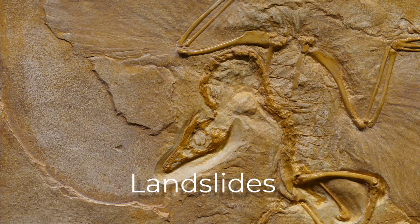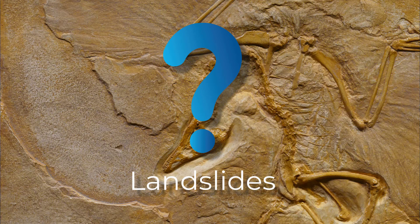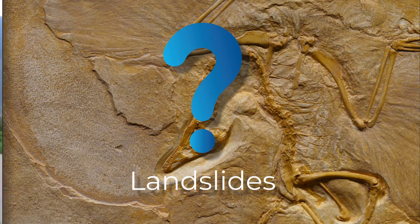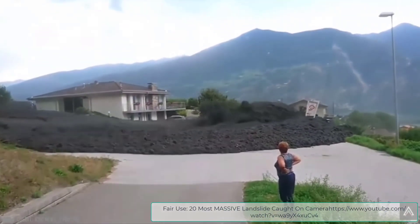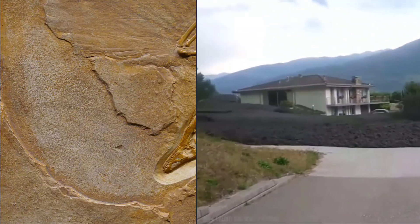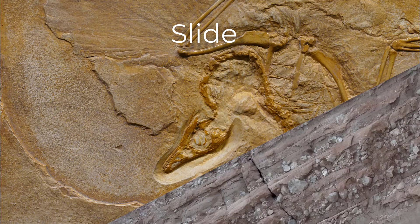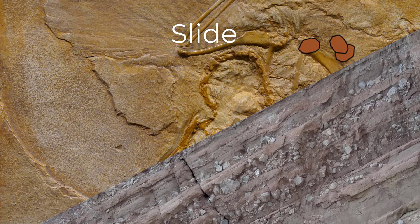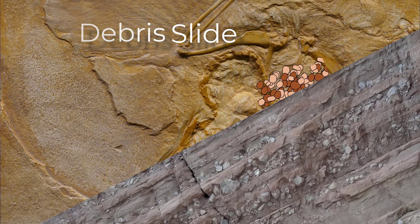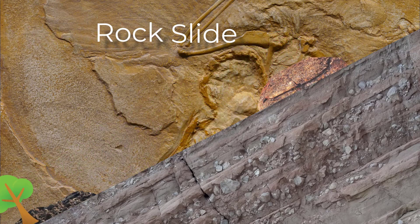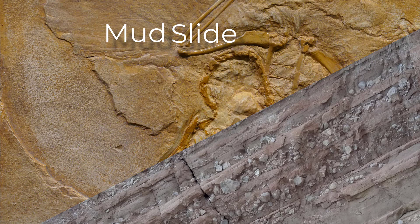Did you know that the word landslide is actually an ambiguous term and is usually not used in geology textbooks? Essentially, every example we've looked at could be called a landslide, so the term is really not very helpful. The word slide, however, is useful. If debris, earth, or rock do not churn when moving, but rather slide downhill as a solid mass, then we add the word slide to be more descriptive, giving us debris slides, earth slides, and rock slides. Mud, however, rarely moves as a solid mass, and so we shouldn't really use the word mudslide — better to say a mud flow.